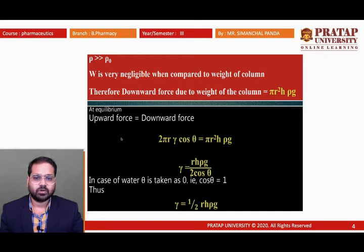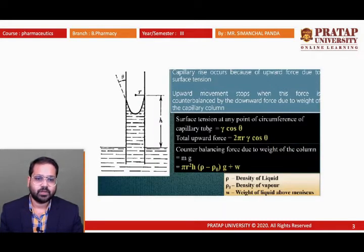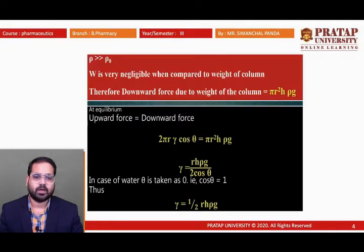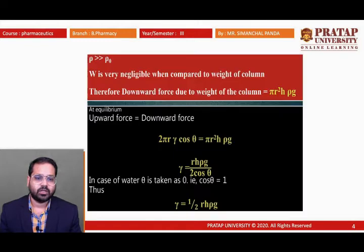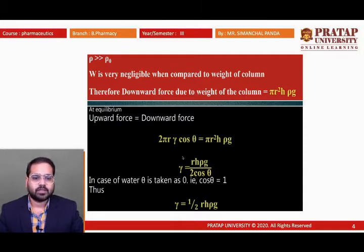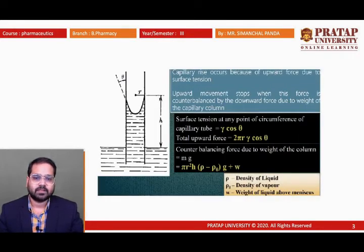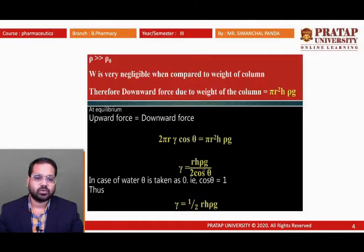Setting upward force equal to downward force: 2πr × gamma cos theta = πr²hρg. Comparing the equation, we get gamma = rhρg / (2 cos theta). Here r is the radius, h is the height, ρ is the density, and g is the acceleration due to gravity.